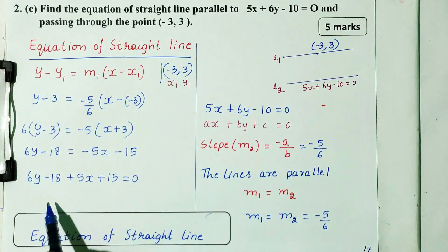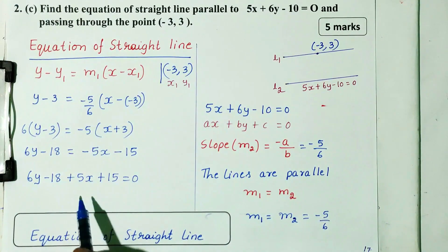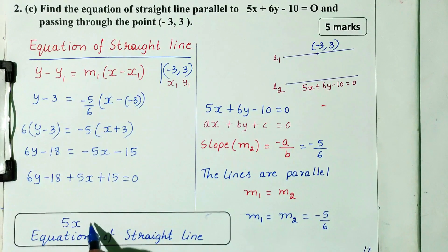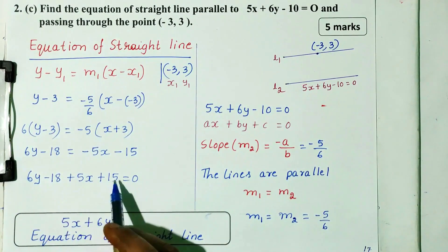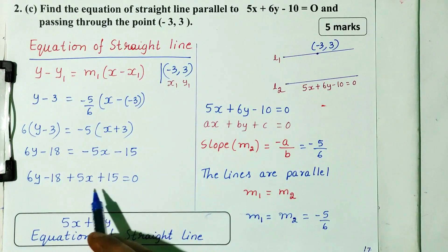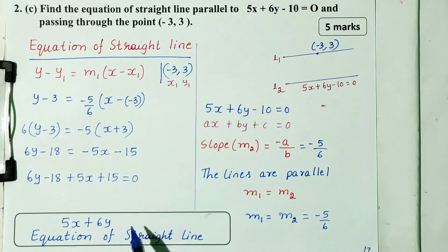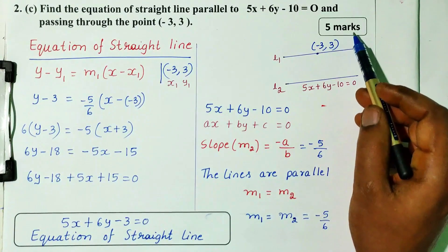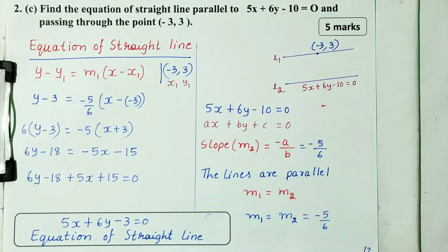Now we will simplify and arrange. First, the x term: 5x. Next, plus 6y. That is minus 18 plus 15, which gives minus 3, equals 0. So the equation of the straight line is 5x plus 6y minus 3 equals 0. This is equal to 5 marks.